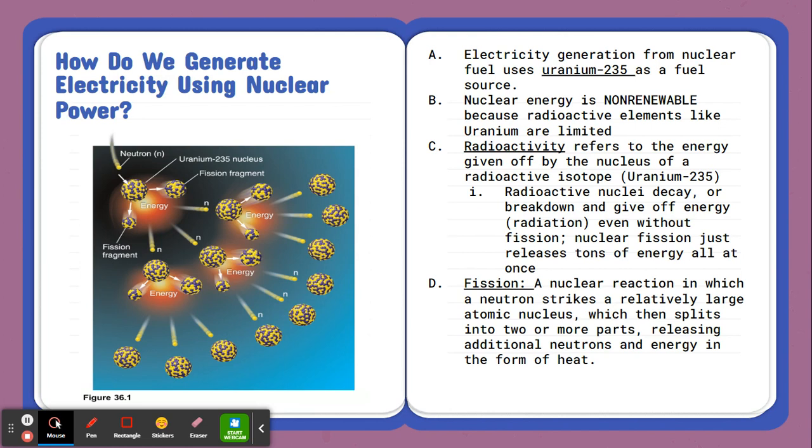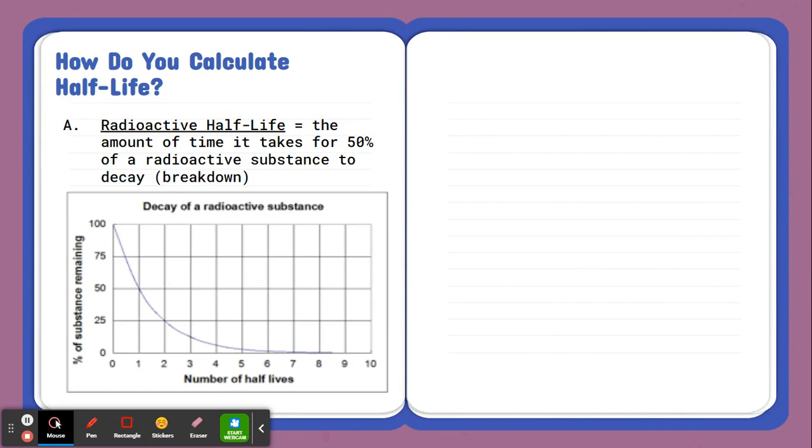And this chain reaction releases tremendous amounts of heat energy that we can then harness to generate electricity. Now, another concept associated with nuclear power that we need to be familiar with is what's known as half-life or radioactive half-life.